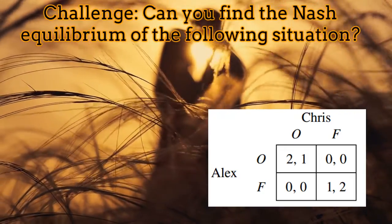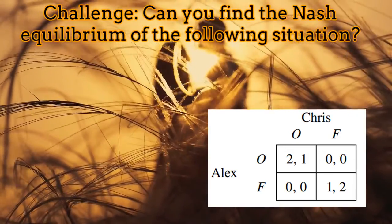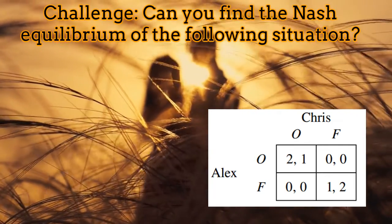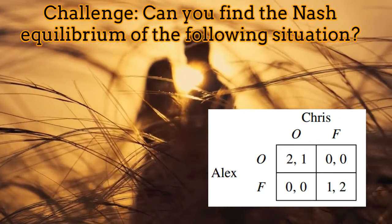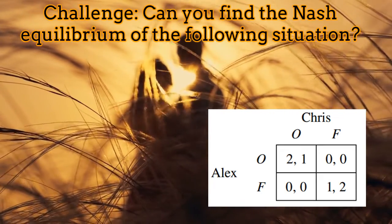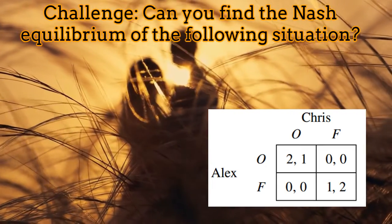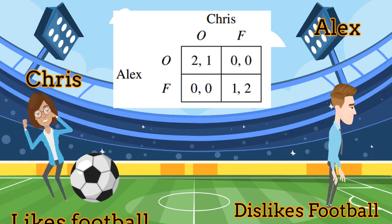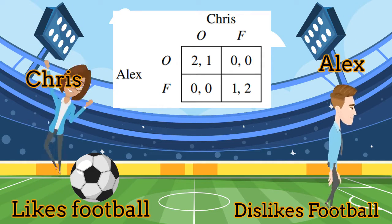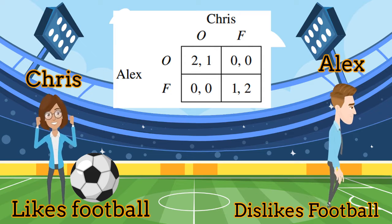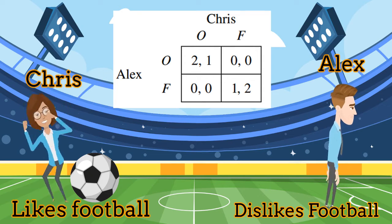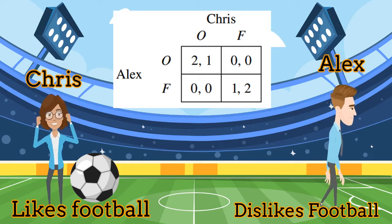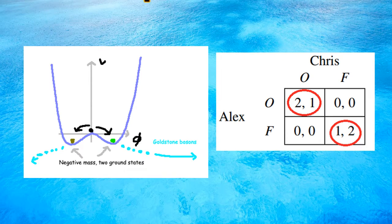There are situations where we will find more than one Nash Equilibrium, as shown on screen. In these situations, whether one equilibrium or the other is selected is a matter of random choice. Imagine the situation where Alex and Chris are a couple, far away from each other in the middle of the city. There is no way they can communicate, and they have to guess where the couple goes. They have two options: Opera and Football.